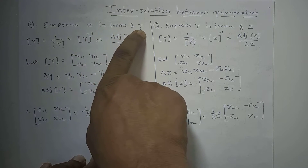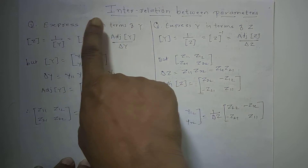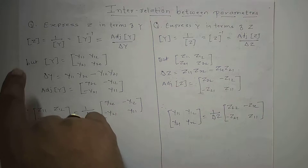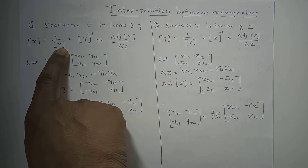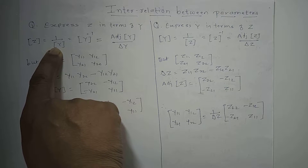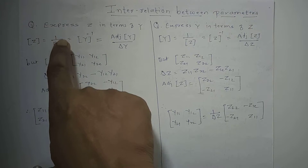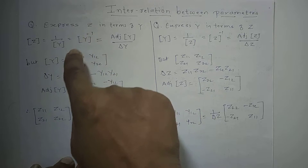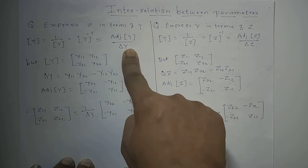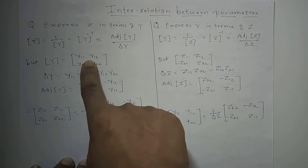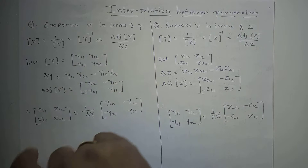First of all, express the z parameter in terms of the y parameter. If you know the y parameter, how do you find out the z parameter? The basic relationship between z parameter and y parameter is z equals 1 upon y — that is, z and y are reciprocals of each other. The reciprocal of a matrix is nothing but the inverse of that matrix. The inverse is obtained by taking the adjoint of the matrix divided by the determinant of the matrix.